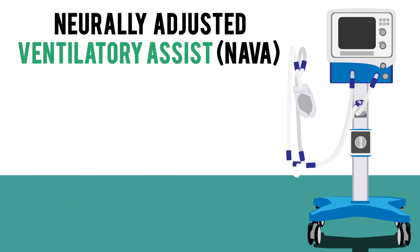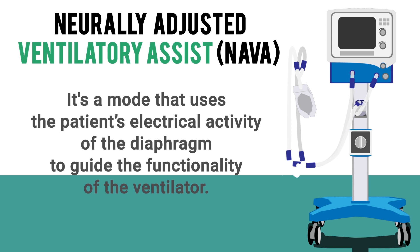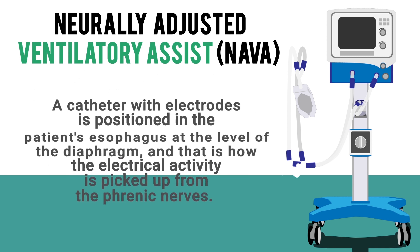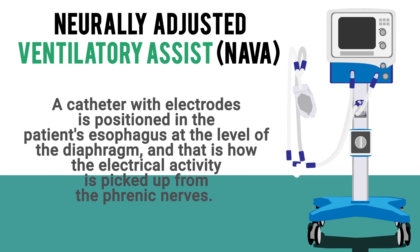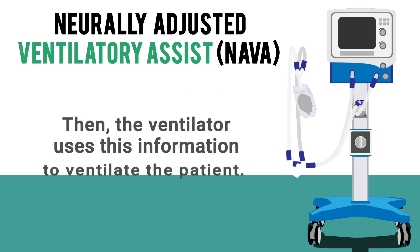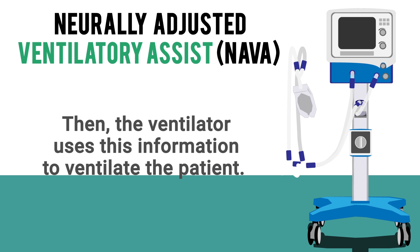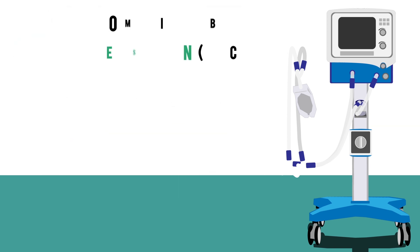NAVA, or Neurally Adjusted Ventilatory Assist, is a mode that uses the patient's electrical activity of the diaphragm to guide the functionality of the ventilator. A catheter with electrodes is positioned in the patient's esophagus at the level of the diaphragm to pick up electrical activity from the phrenic nerves. The ventilator then uses this information to adequately ventilate the patient.